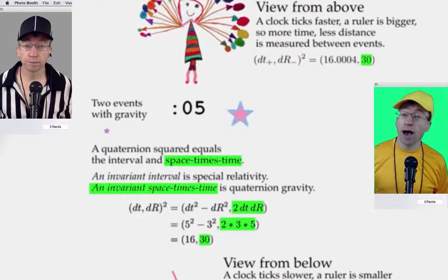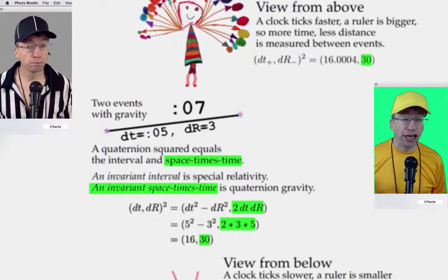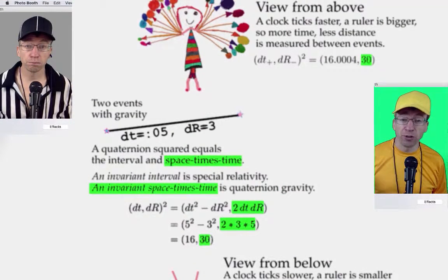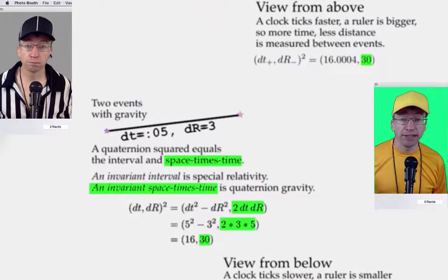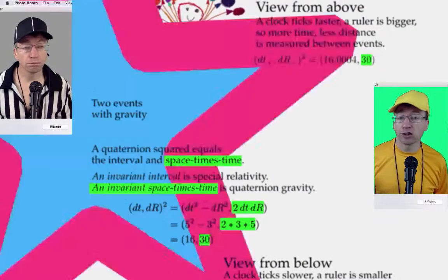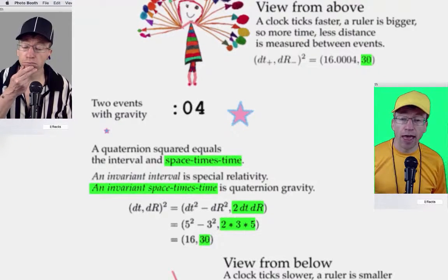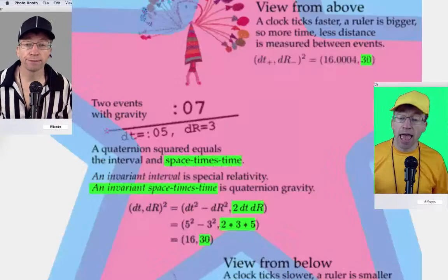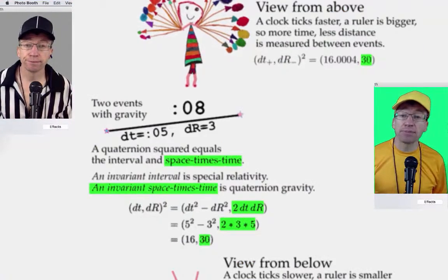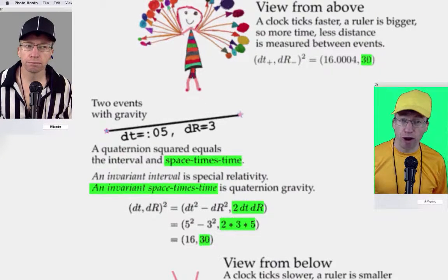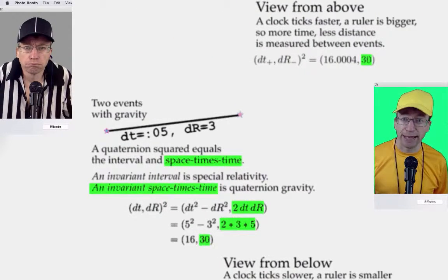Hello, I'm Quaternion Gravity Doug in yellow. Everything Kelly Green on this page is about quaternion gravity. A quaternion squared equals the interval and space-times-time, and invariant space-times-time is quaternion gravity. But what does that mean?